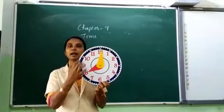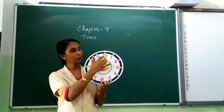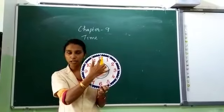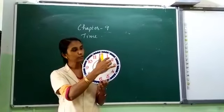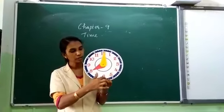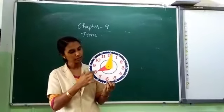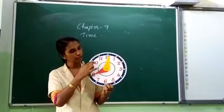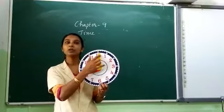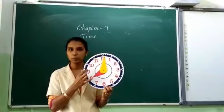Here there are 12 numbers. Starting from here I see 12, then 1, 2, 3, 4, 5, 6, 7, 8, 9, 10, 11, 12. A clock has 12 numbers.